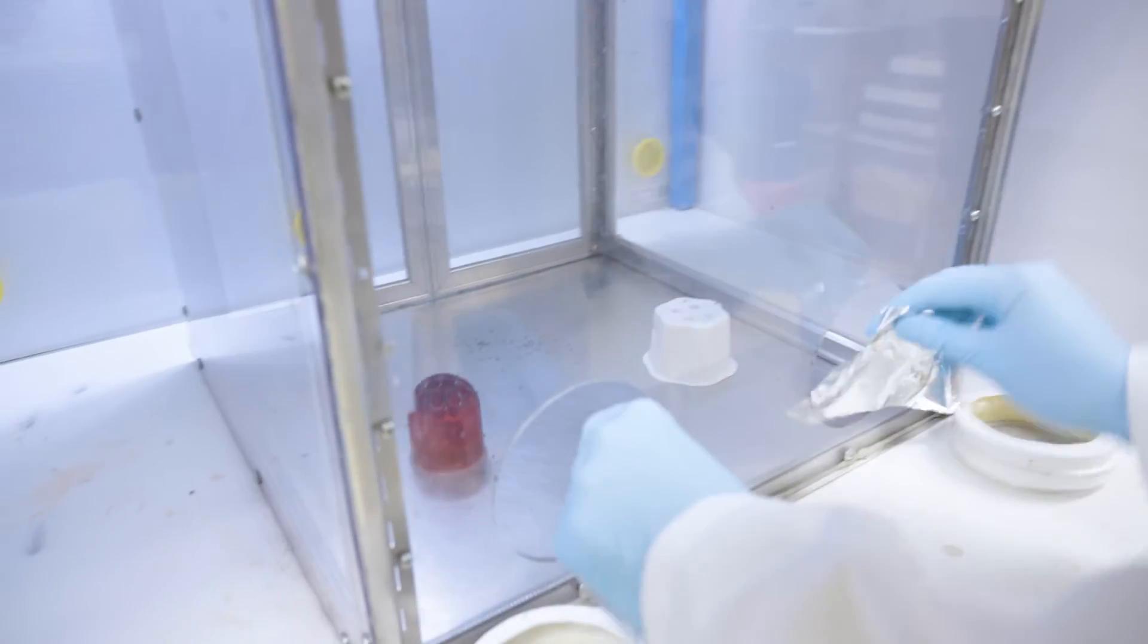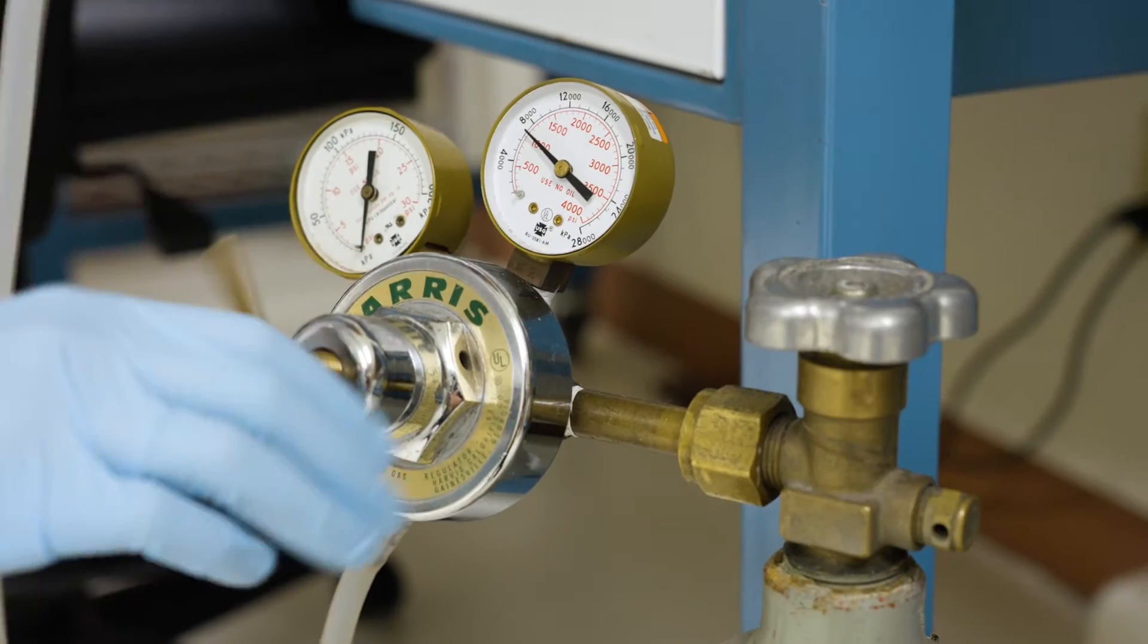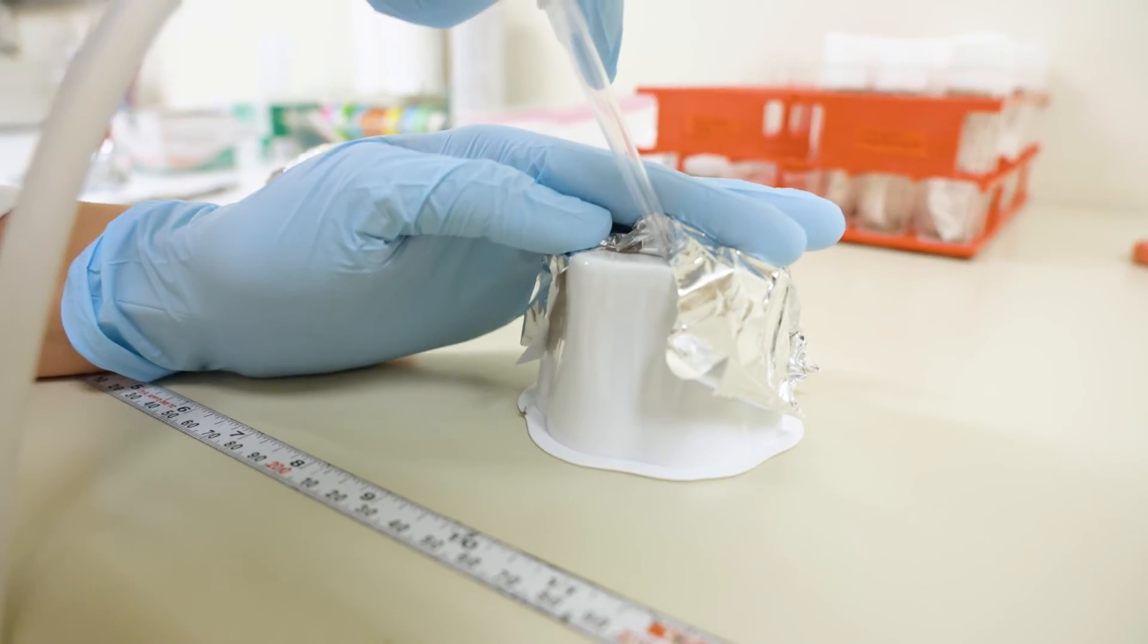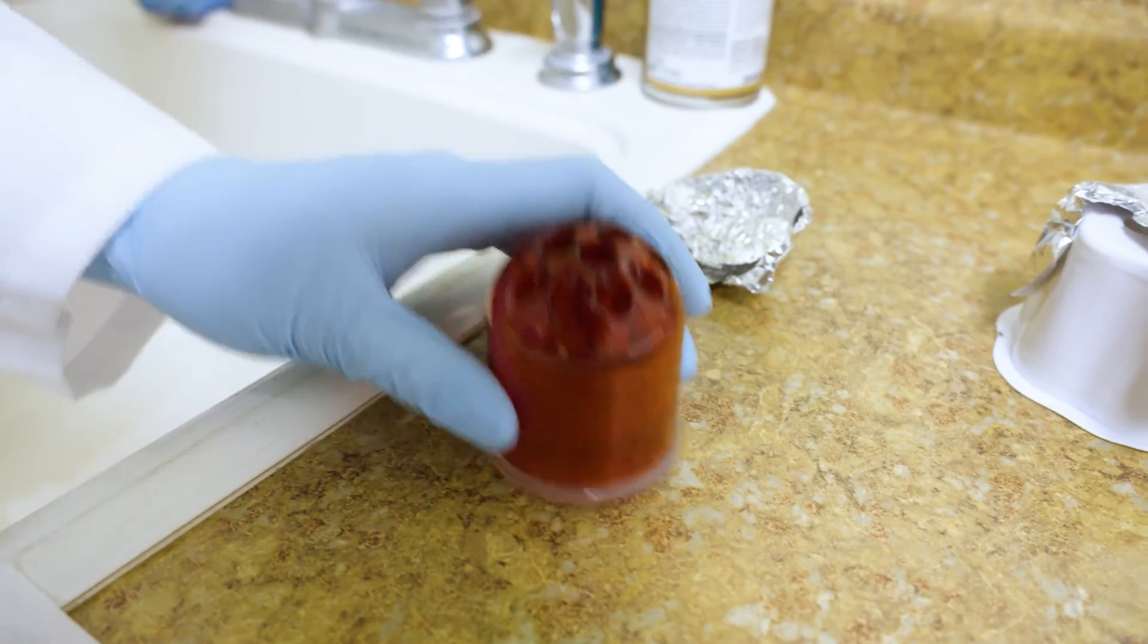When testing is completed, I take a piece of tin foil, cover each trap, and then knock them out with carbon dioxide. Then I walk the traps to a separate room where the fruit flies are counted.